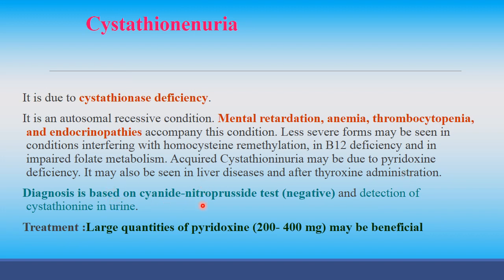Diagnosis of cystathioninuria is based on the cyanide nitroprusside test, which is negative, and detection of cystathionine in urine. Large quantities of pyridoxine — 200 to 400 mg — may be beneficial.